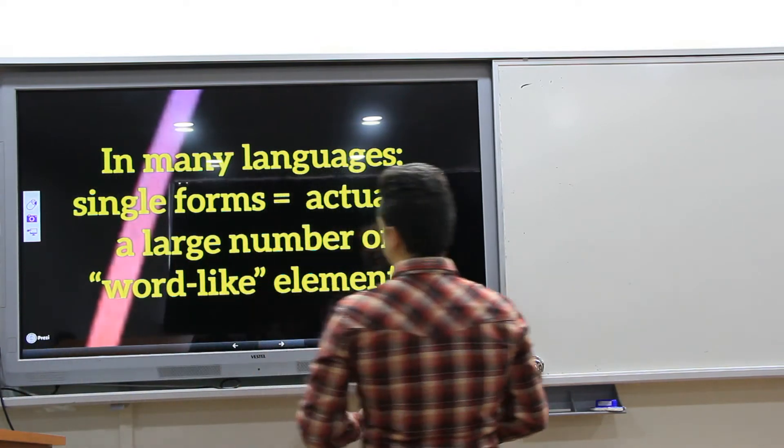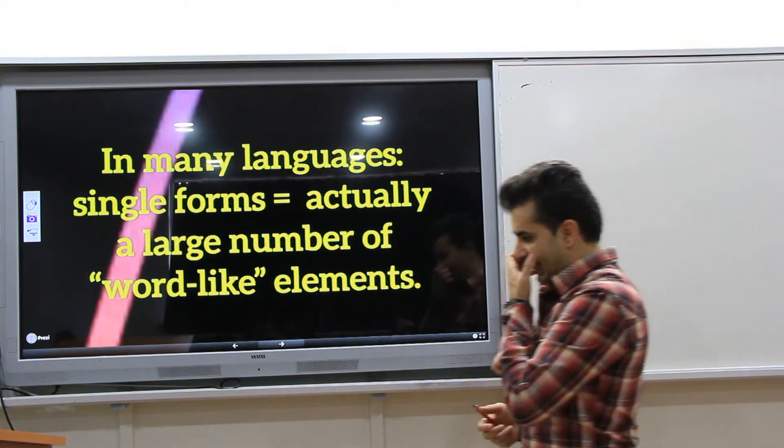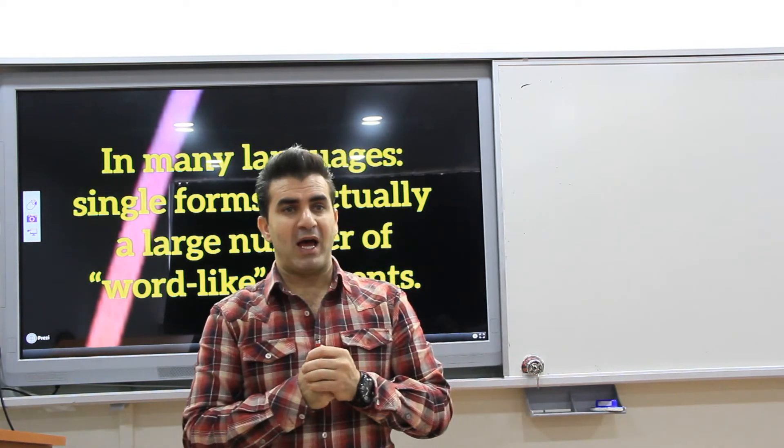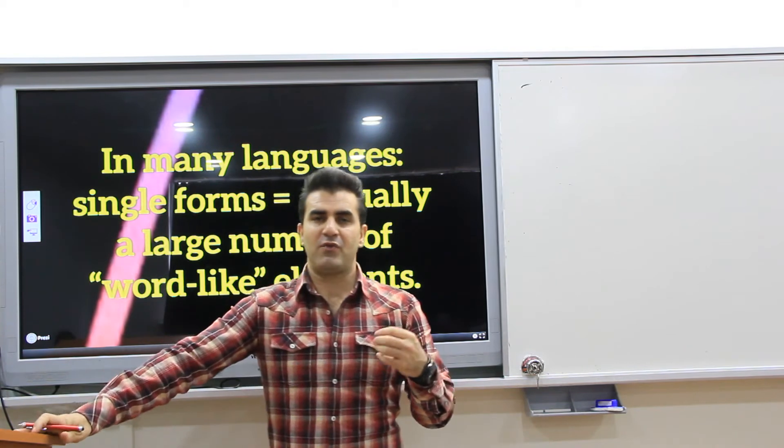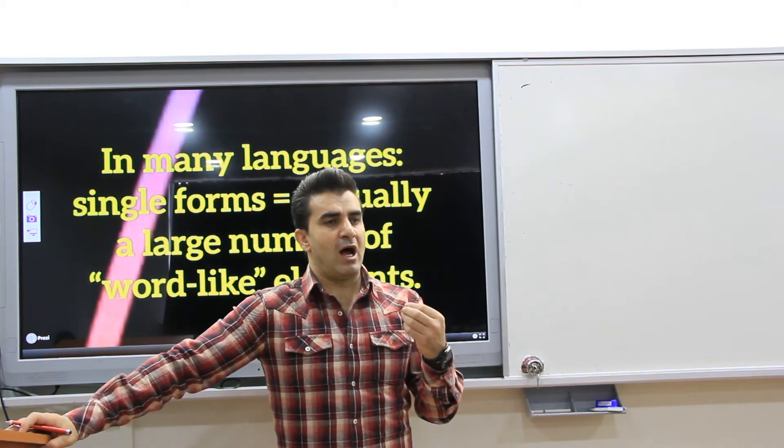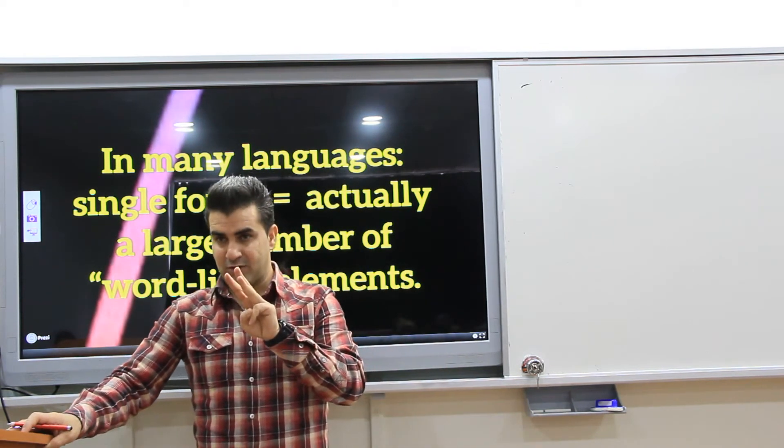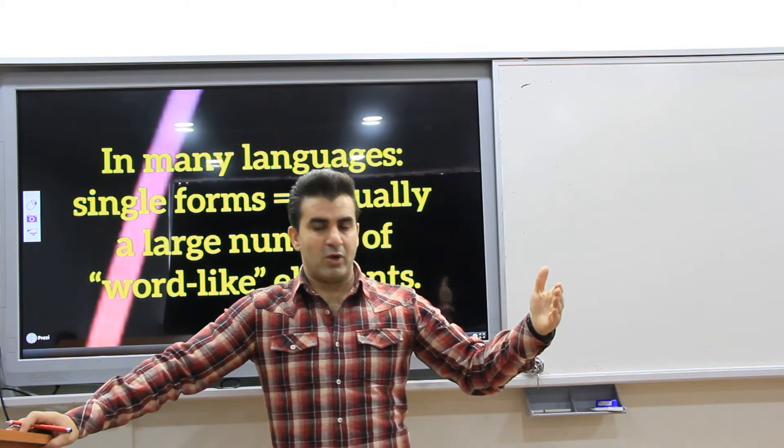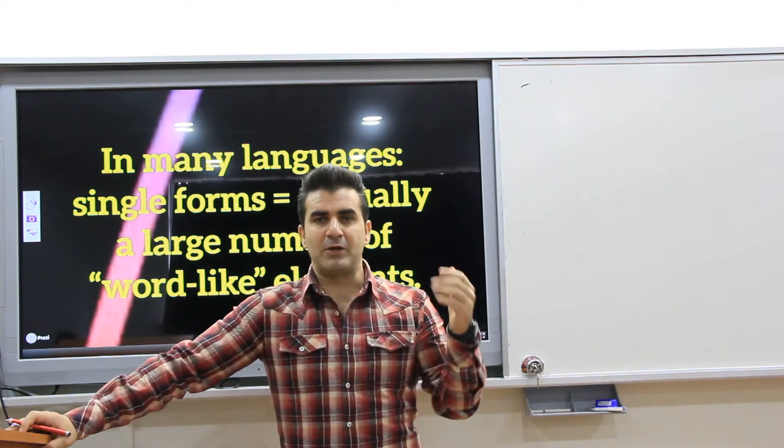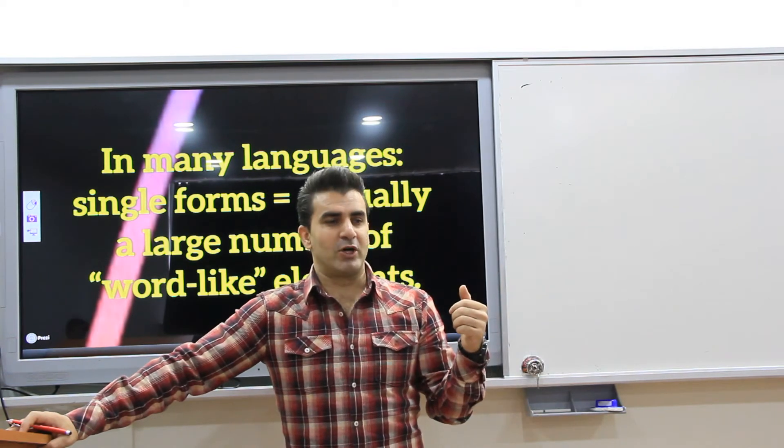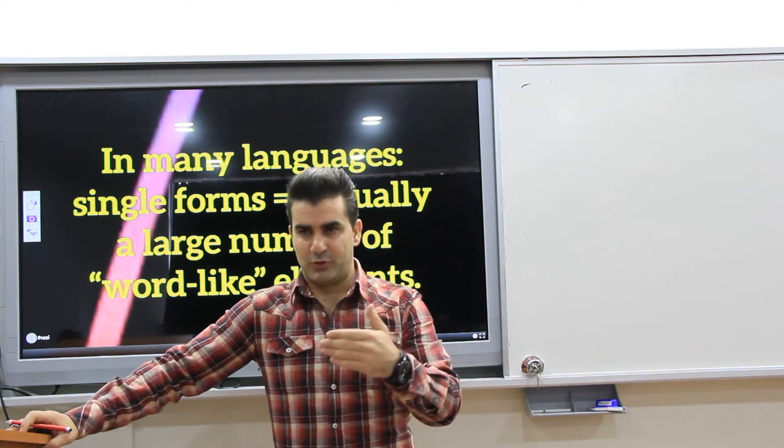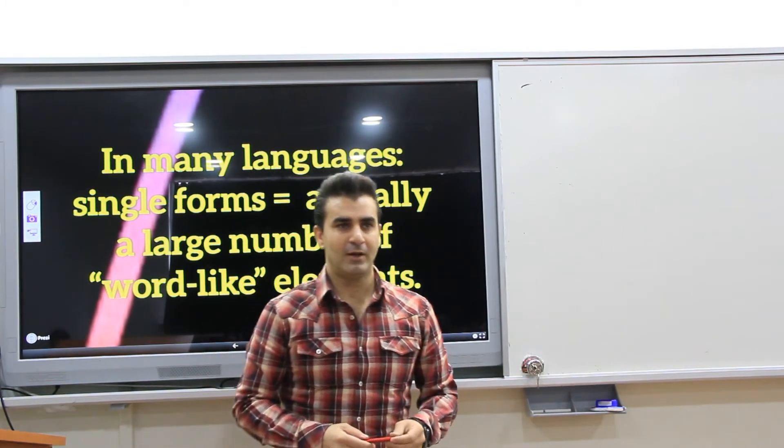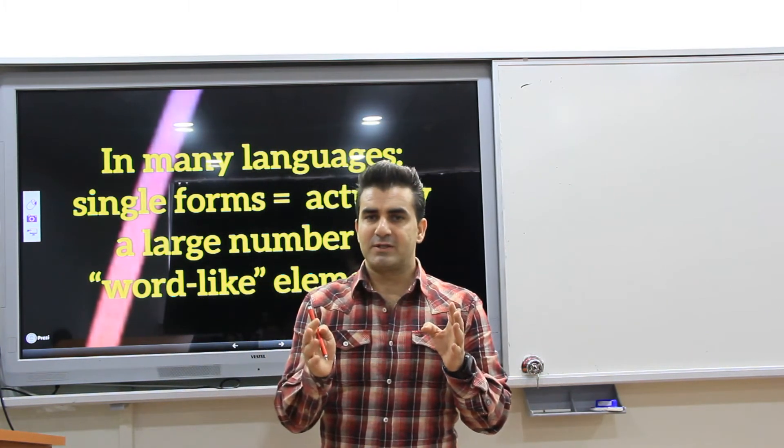In many languages single forms are indeed a large number of word-like areas. So in English for example when we combine different words, when we want to convey our message, we combine different words, separate words. If you want to convey that you love another person, you say I love you. You combine three forms. Is that correct? In Turkish, you say seni seviyorum, or ben seni seviyorum, or just seviyorum. In Kurdish, you say as jete hazlik. In Russian, you say ya tibya lyublyu. So, in other languages also, you combine different language elements, right?